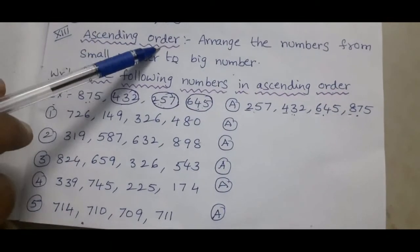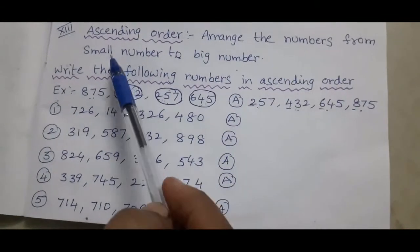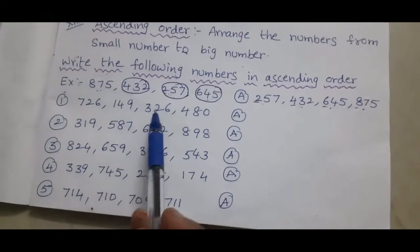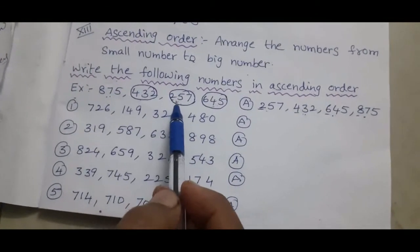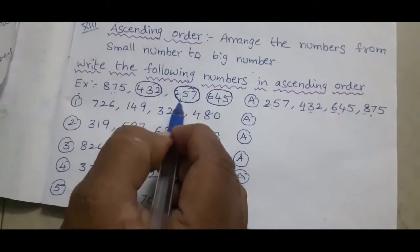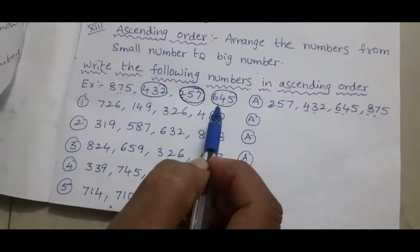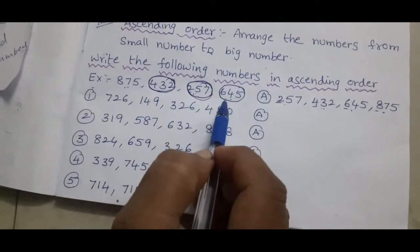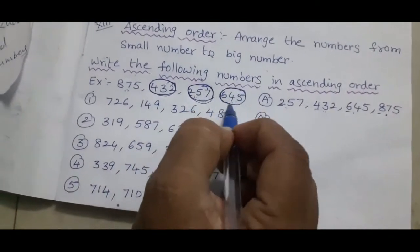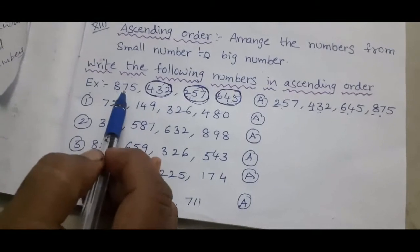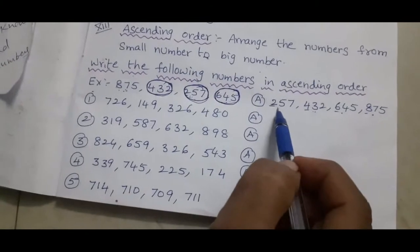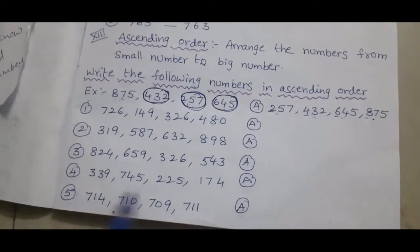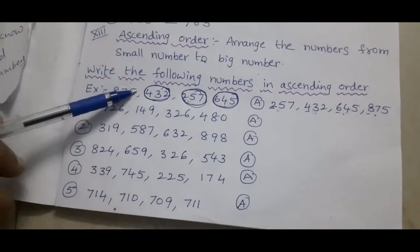Next topic: ascending order. Ascending order means arrange numbers from small to big. Example: 247, 645, 432, 875. We find the smallest number first — 247. Next, from the remaining 645, 432, 875, the smallest is 432. Next, from 645 and 875, 645 is smaller. So ascending order: 247, 432, 645, 875. Remaining problems, follow the example.